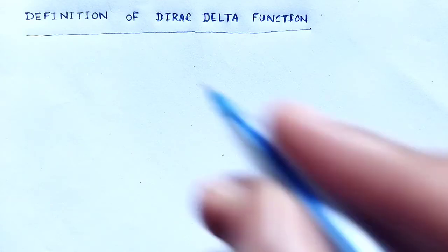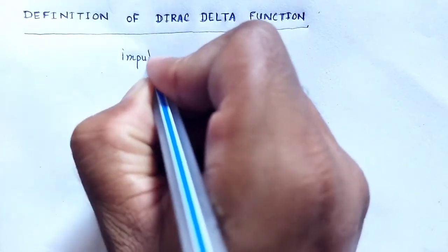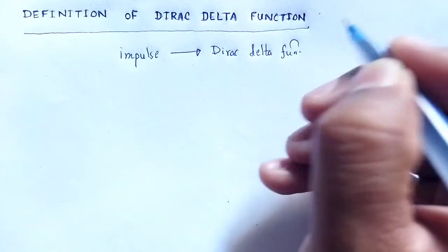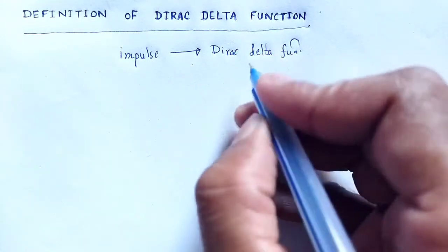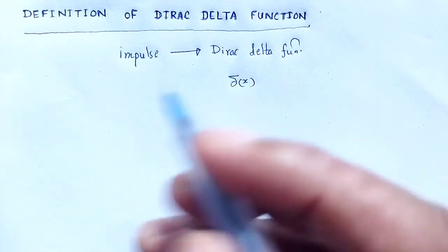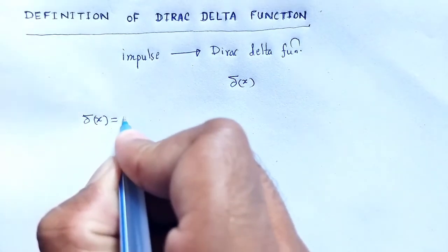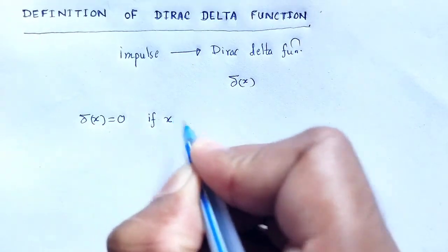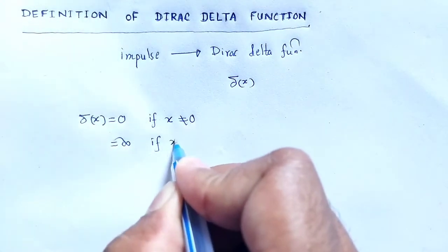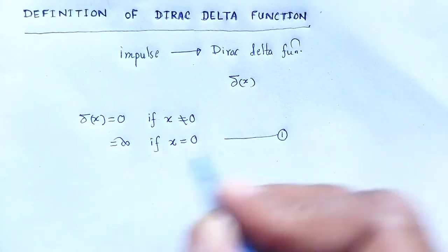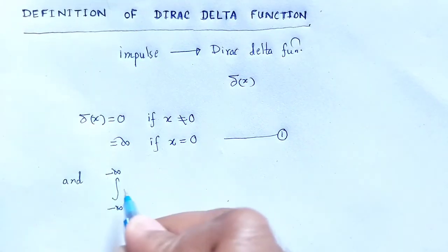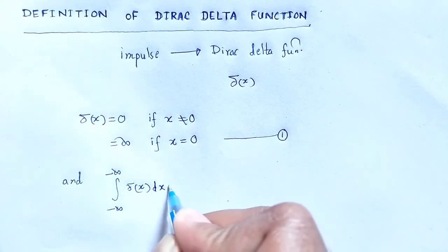That is why the impulse function is known as the Dirac delta function, and that Dirac delta function is given by δ(x). According to the definition of the Dirac delta function, δ(x) is equal to 0 if x ≠ 0, δ(x) is equal to infinity if x = 0, and the integration over minus infinity to plus infinity of δ(x) dx is equal to 1.